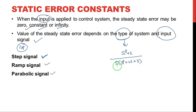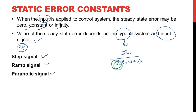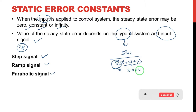In this transfer function, look at the denominator. There is an S power 1 term. So S is equal to 0 at the origin. The number of poles at the origin — that is S to the power of N — determines the type of the system. Here S power 1 is present, so this is a Type 1 control system.